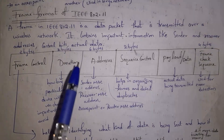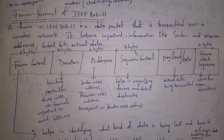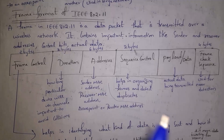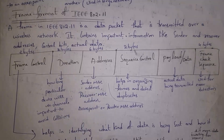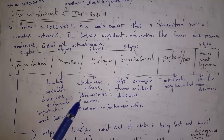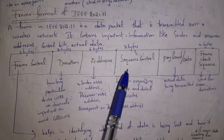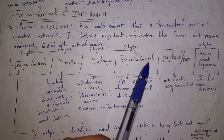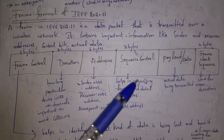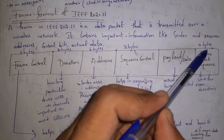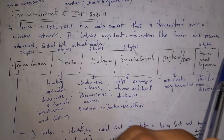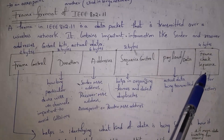The address field is 6 bytes and contains the sender MAC address, receiver MAC address, and access point MAC address, allowing devices to identify each other in the network. The sequence control field allows data to be sent in sequence and can identify duplicate values. The payload is the actual data being sent — for example, the message 'hello'. The last field is frame check sequence, also called checksum, which is 4 bytes and is used to identify errors in the data.